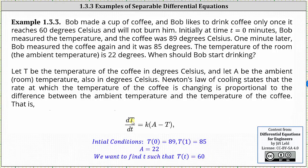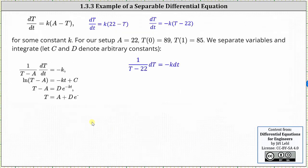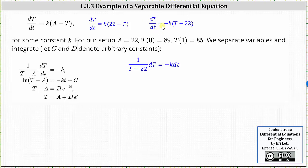Now let's work on determining the particular solution to the differential equation. We know A is equal to 22, so let's replace A with 22, giving us dT/dt equals K times the quantity 22 minus T. Because we're going to solve for big T and it'll be helpful if big T is positive, let's factor out negative K from the right, giving us dT/dt equals negative K times the quantity T minus 22. Now we solve the differential equation using the technique of separation of variables. We need the quantity T minus 22 on the left, so we multiply both sides of the equation by one divided by the quantity T minus 22.